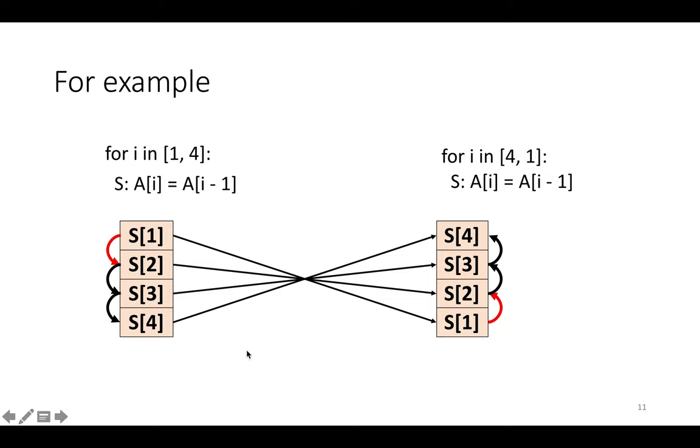For example, of course, this dependence from s1 to s2, it's pointing forward in the original trace and now suddenly it's pointing backward.